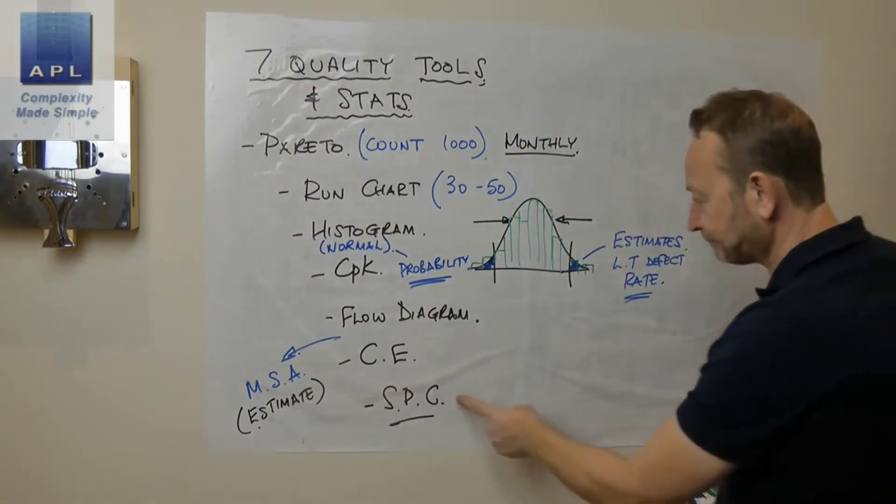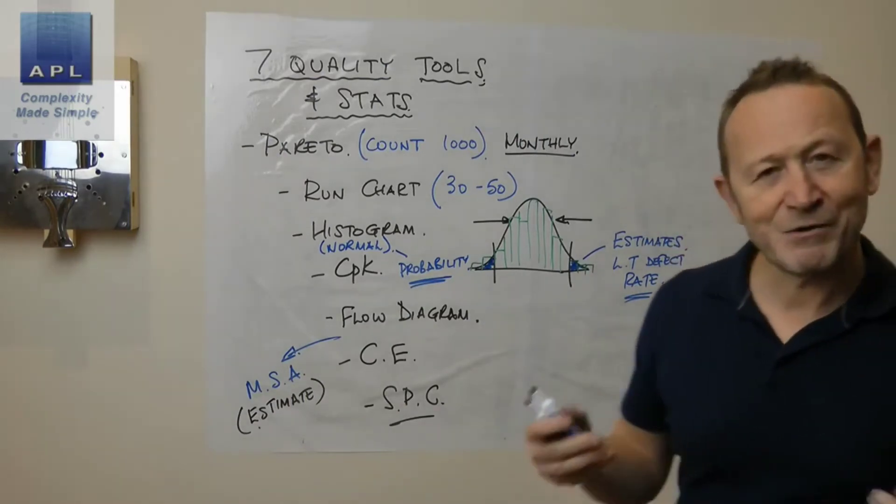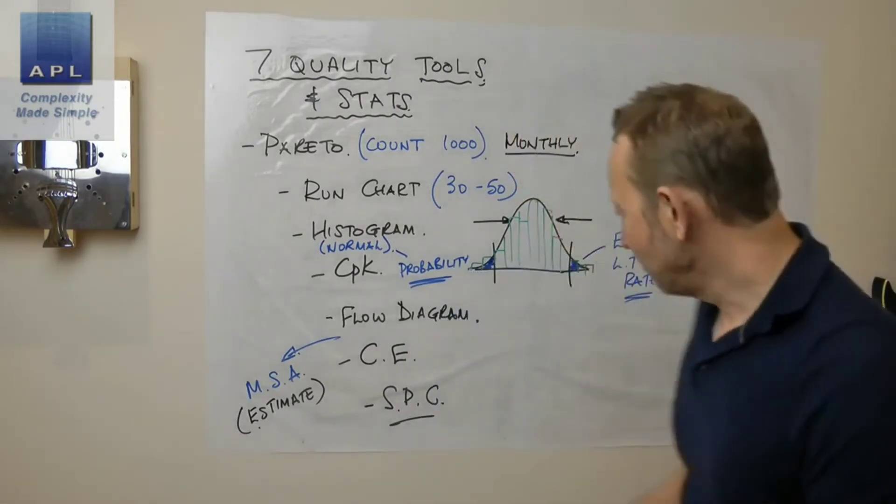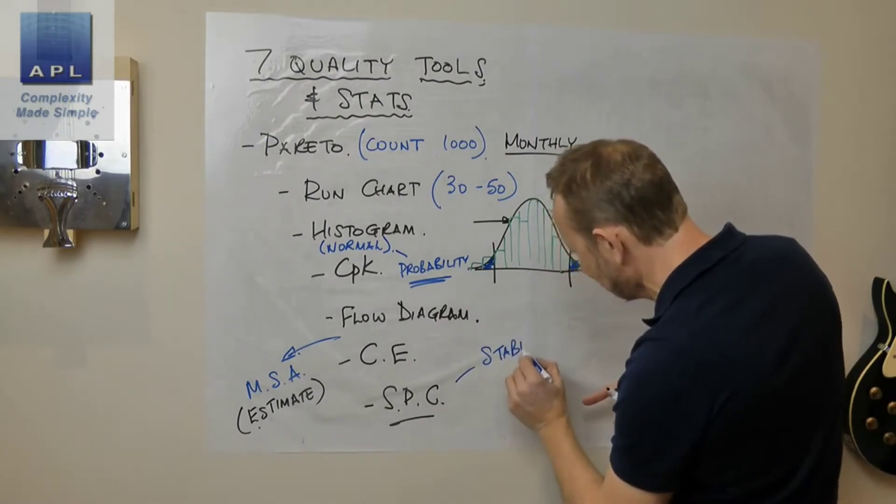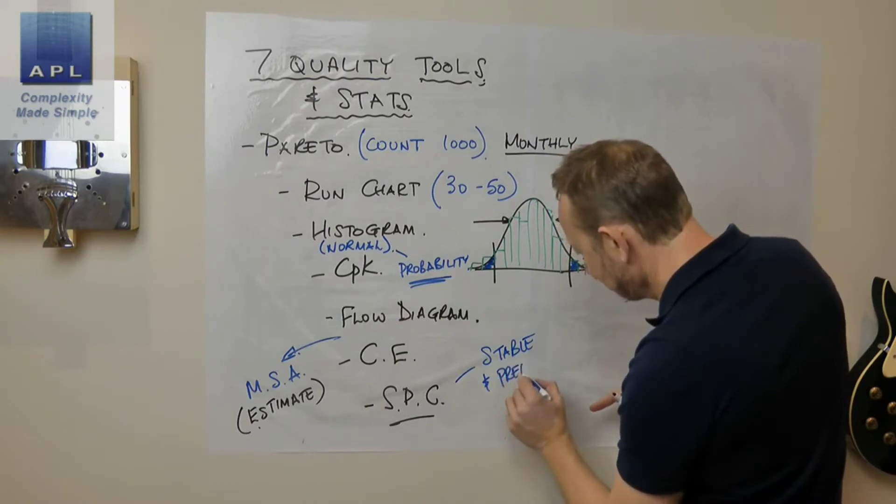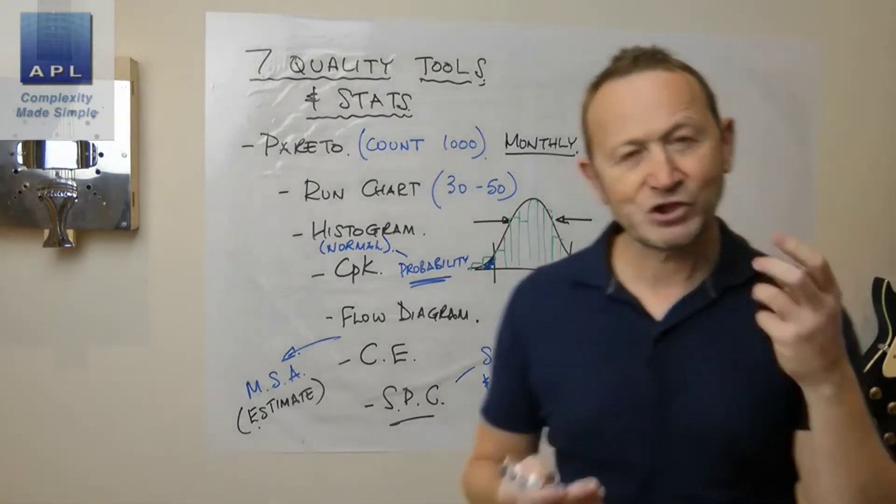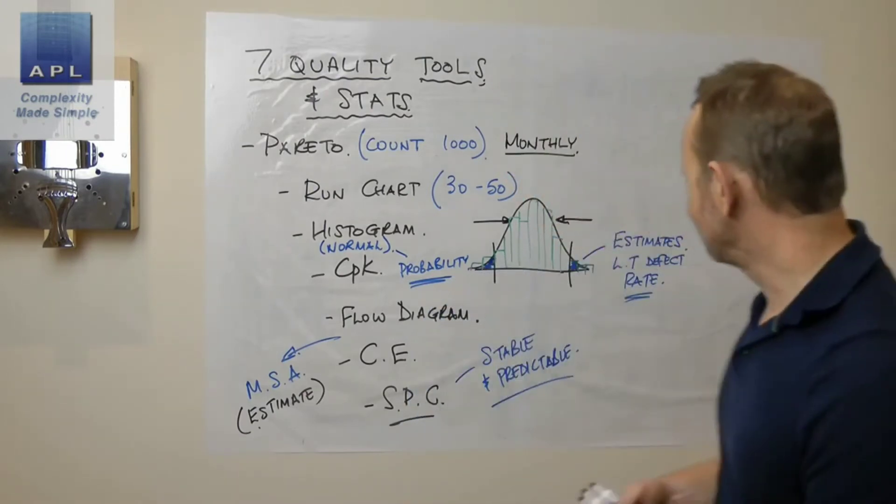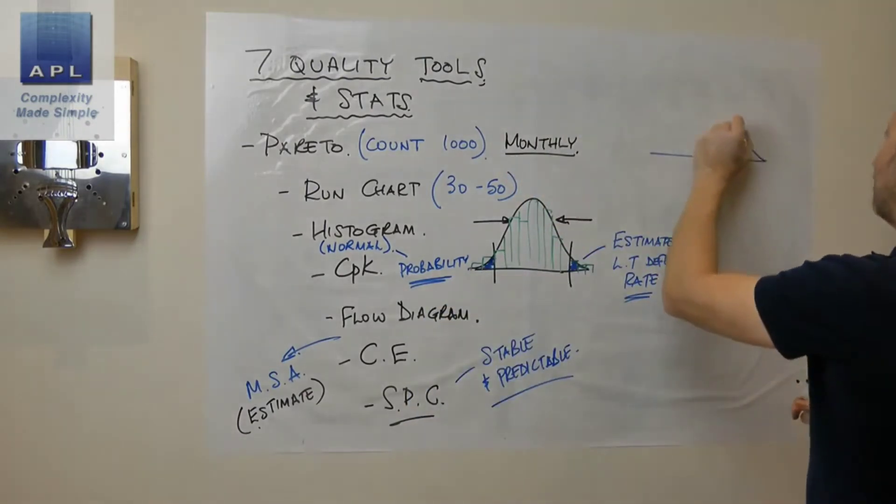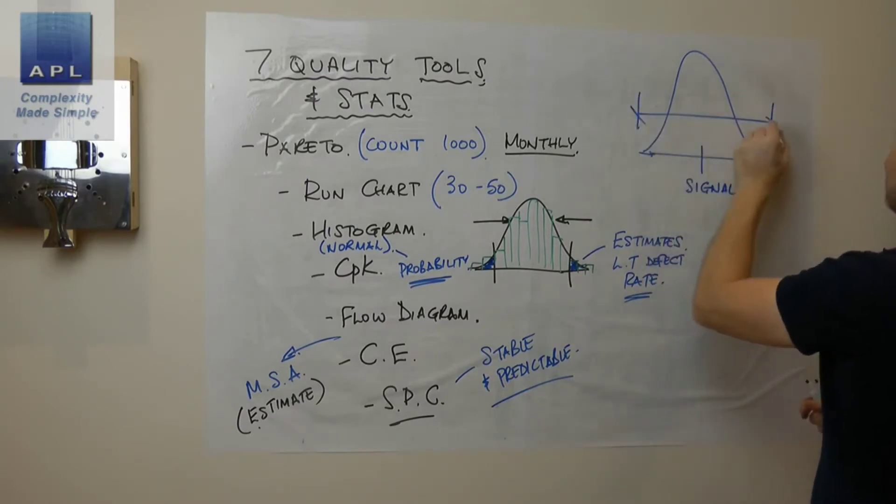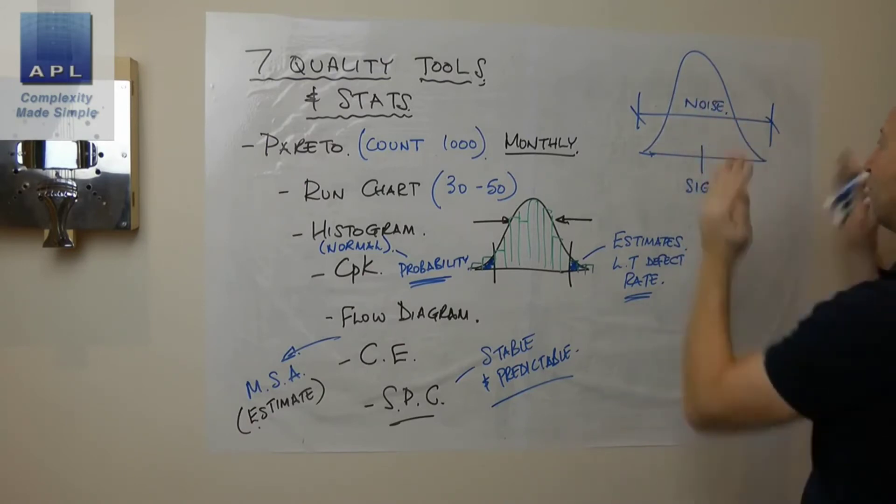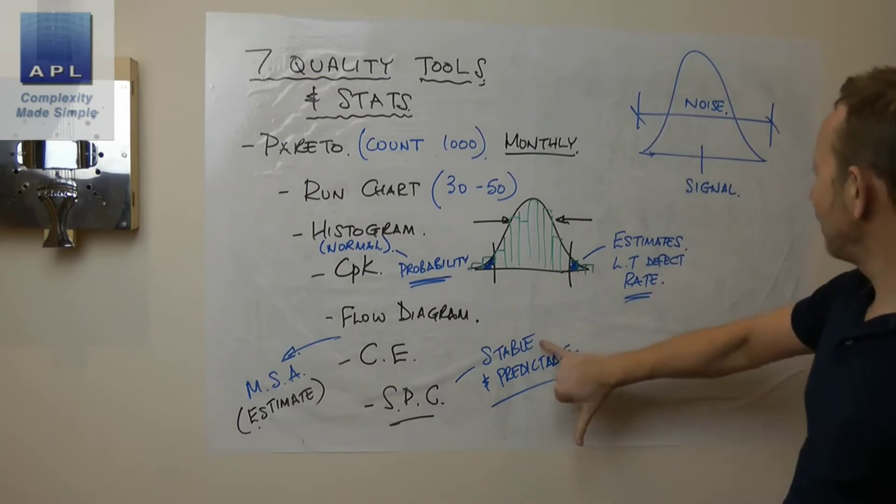When we get into SPC, again the software is going to do the calculation, but I understand the basics of SPC. A process is said to be under control when it is stable and predictable. What does that mean? Well, stable means that the signal doesn't move. When you've got a data set, there's the signal, which is the middle, and there is the noise, which is the spread, the range of the data.